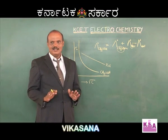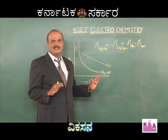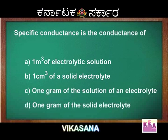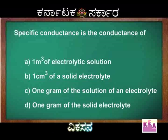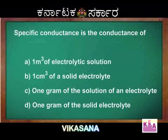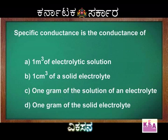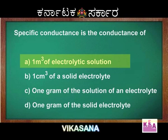Let us take an important question based on the Kohlrausch's law and conductivity. Question: specific conductance is the conductance of — option A: 1 meter cube of electrolytic solution; option B: 1 centimeter cube of solid electrolyte; option C: 1 gram of the solution of an electrolyte; option D: 1 gram of the solid electrolyte. As per the definition, conductivity is the conductance of 1 meter cube of the electrolytic solution. Therefore, option A is correct.